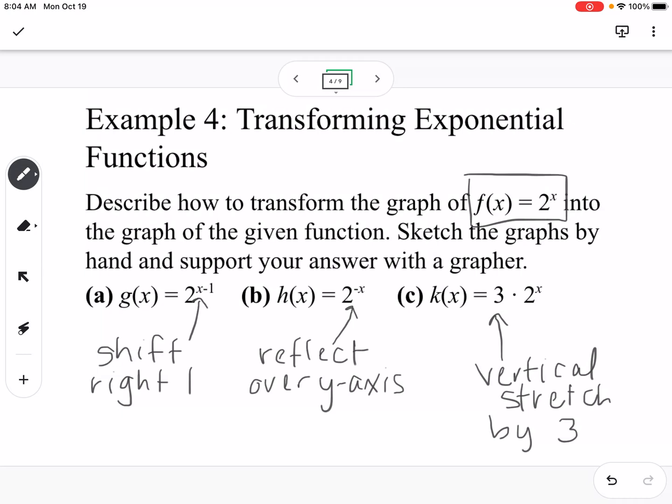If we have numbers outside of the 2 to the x, that would be a shift up and down, and we'll look at those examples in a couple slides.